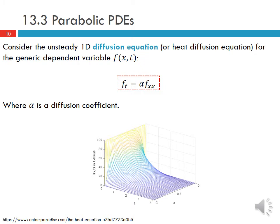Let's consider the unsteady 1D diffusion equation, sometimes called the heat diffusion equation or the heat equation, for a generic dependent variable F of X and T. This can be written as F_t equal to alpha times the second partial of F with respect to X squared, where alpha is the diffusion coefficient. Looking at the solution domain, we start with some initial temperature profile which then progresses in time, showing diffusion down to some steady state condition.